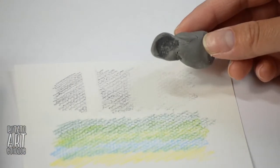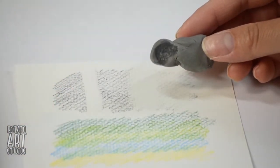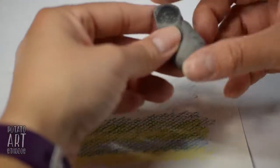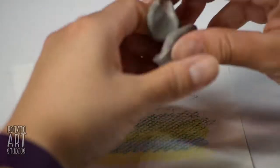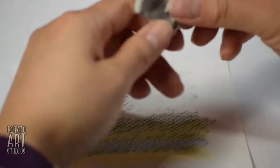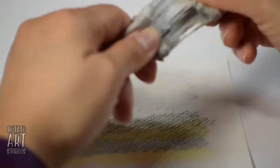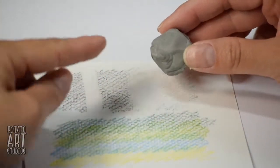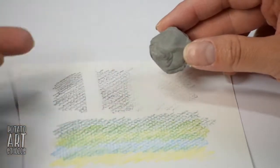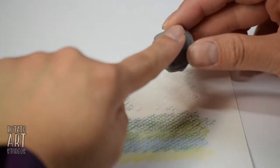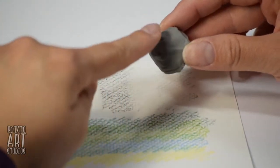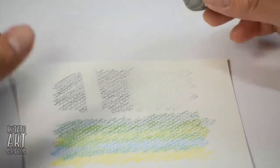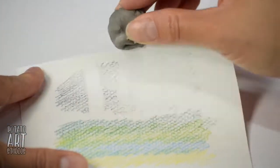And so to clean your kneaded eraser, all you need to do is just kind of knead it like taffy a couple times, roll it back into a ball. And that graphite that I just erased is now incorporated into the entire eraser. So the surface is now back to its original level of tackiness and you can continue erasing.